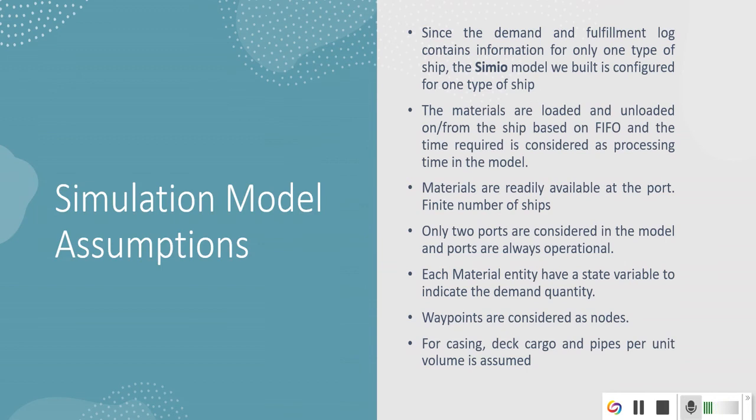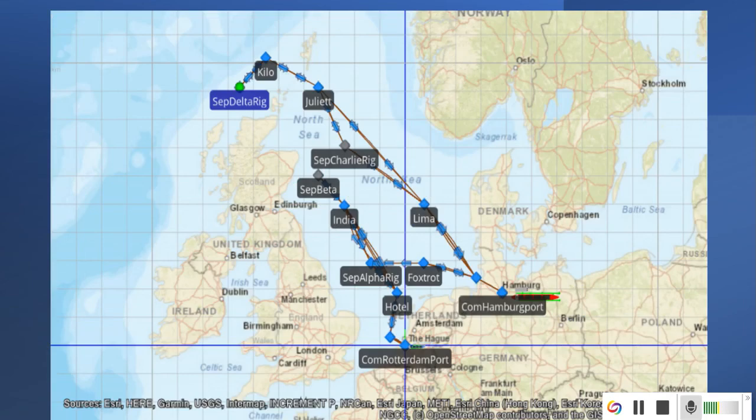There are some specific assumptions to the simulation model such as there are only two ports considered. Each material entity has the state variable to declare the demand quantity. Waypoints are considered as nodes. As the demand block trial contains only one type of ship, the model also considered one type of ship.